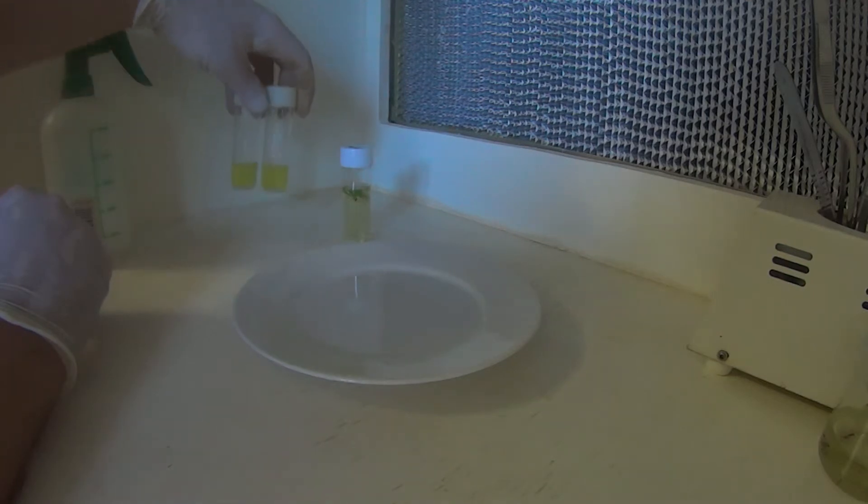Now the media, as I mentioned before in the other Venus flytrap video, has kinitin. This media has a bit of kinitin added to it to try and help that callous form. So that's why it's dyed yellow.